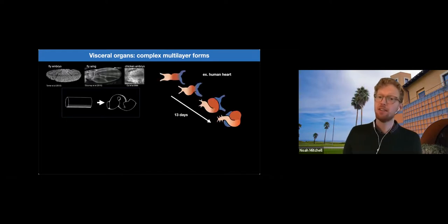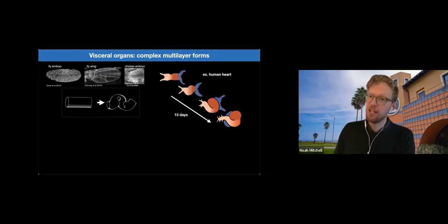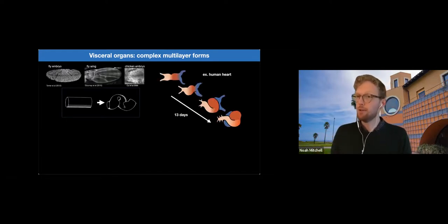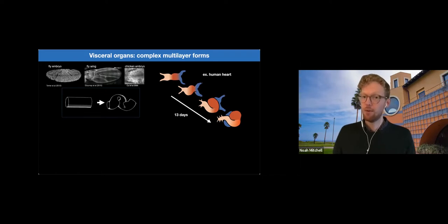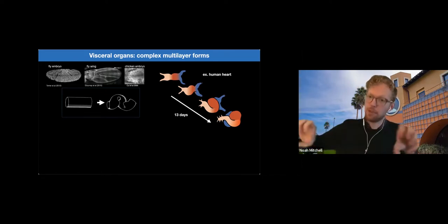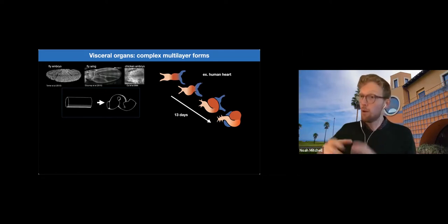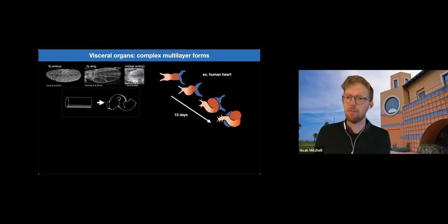And here, cells arrange into tube-like sheets, which further deform into coils of compartments. This is the case, for instance, in the development of our hearts. This is the human heart, which transforms from a simple tube that folds then into a coil of compartments.